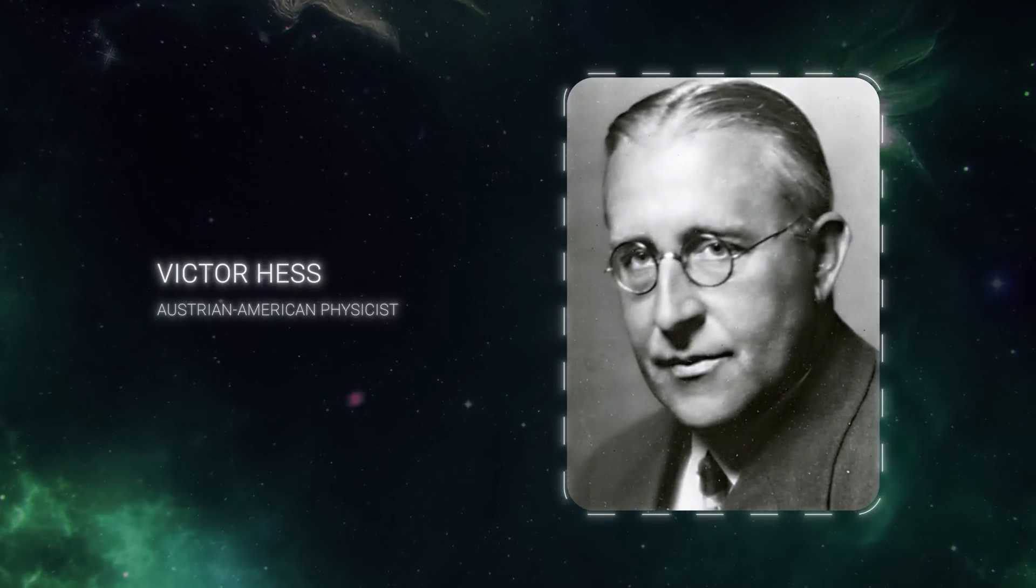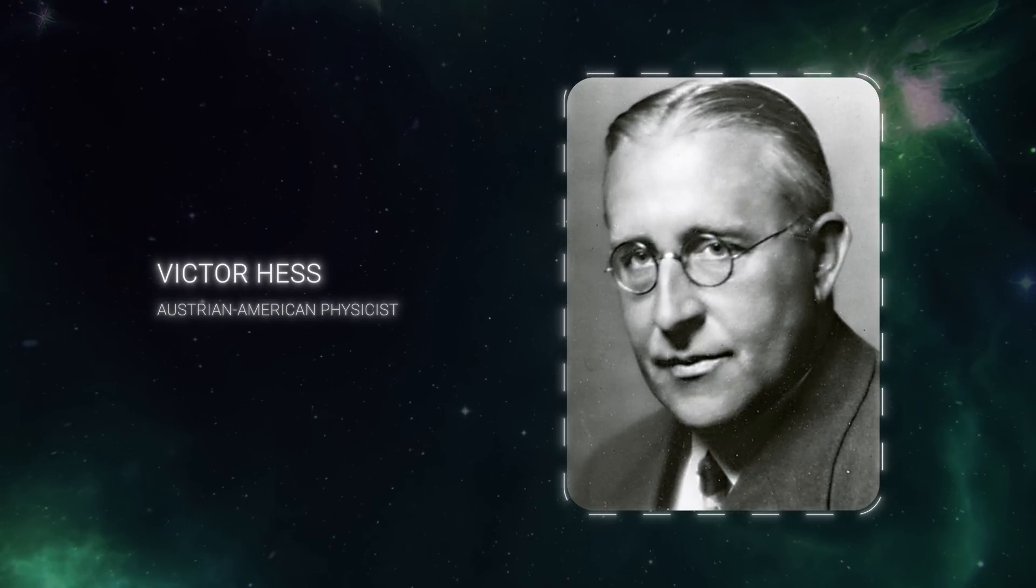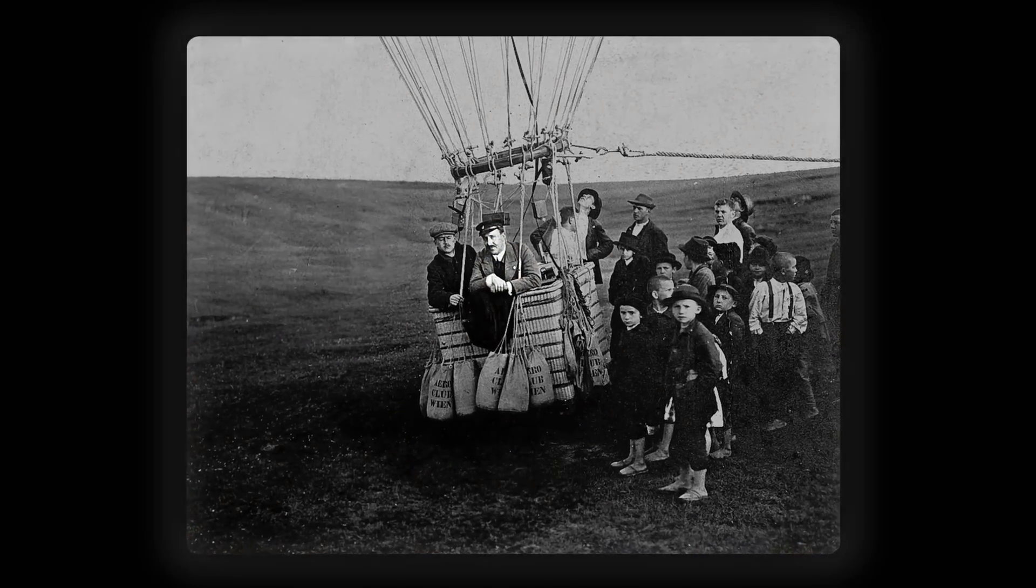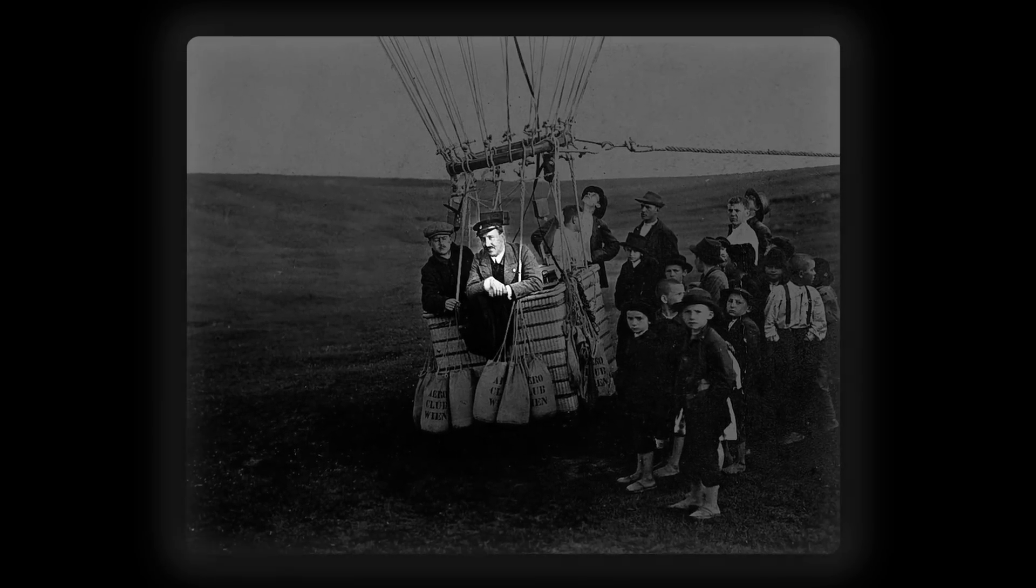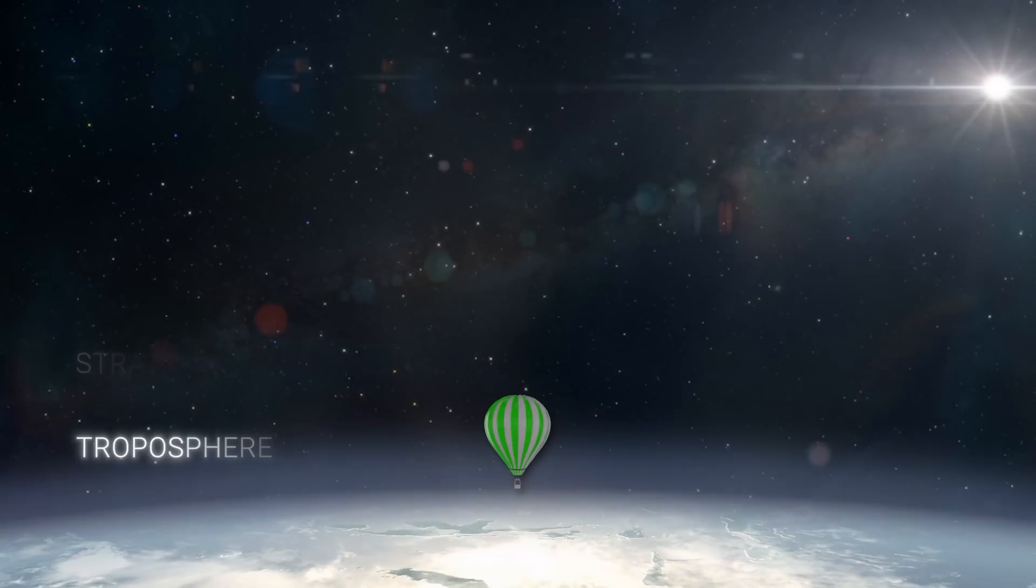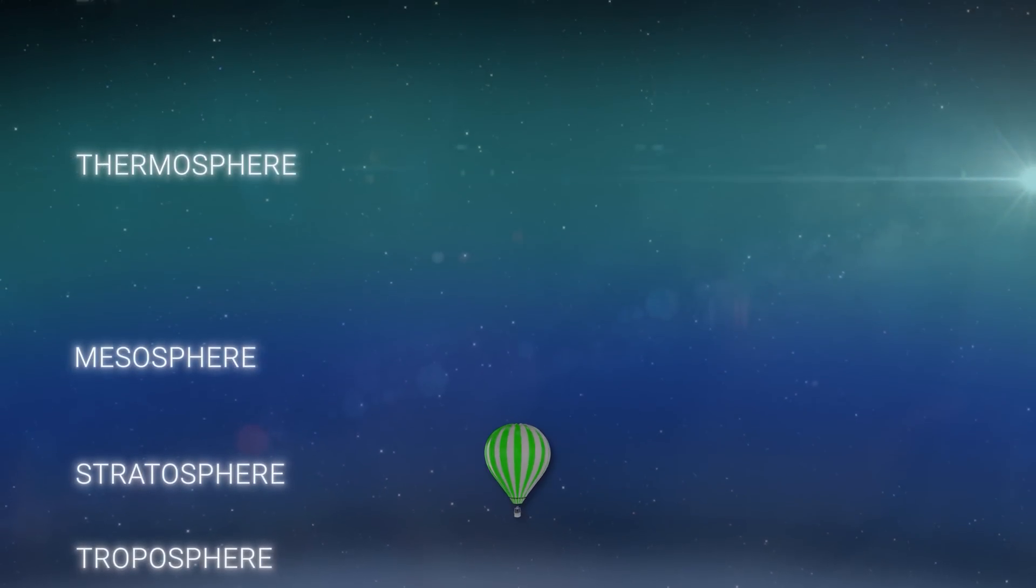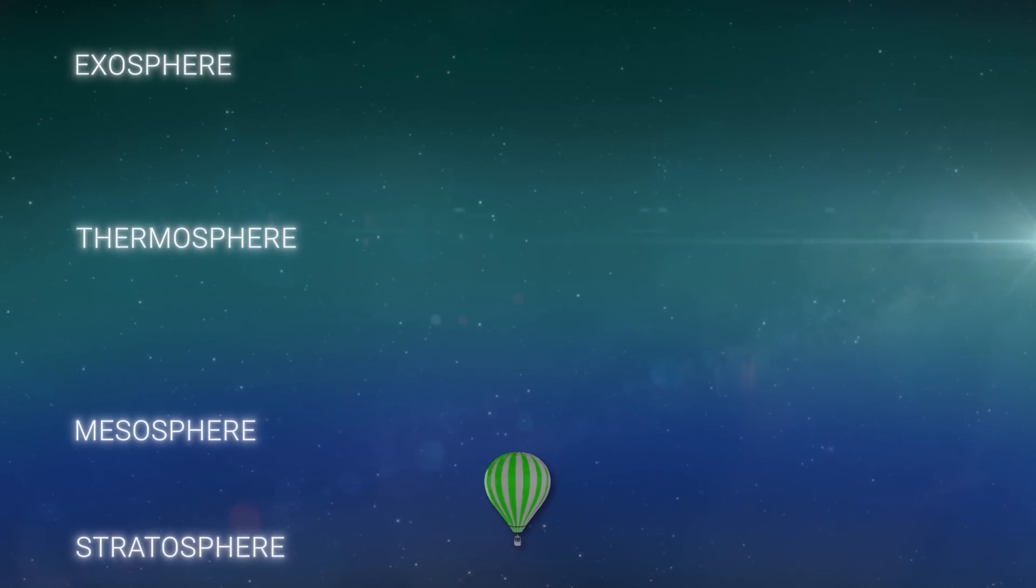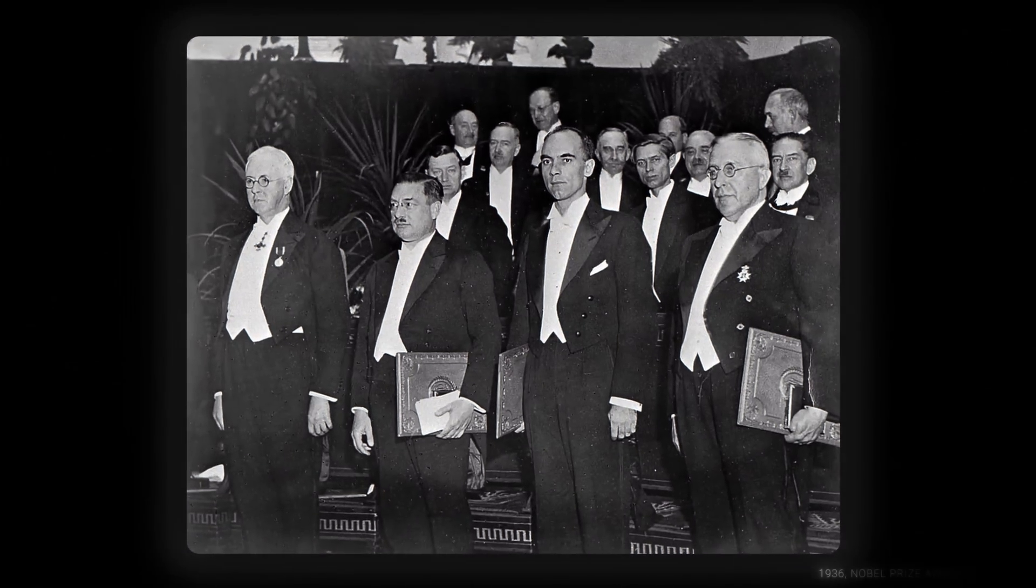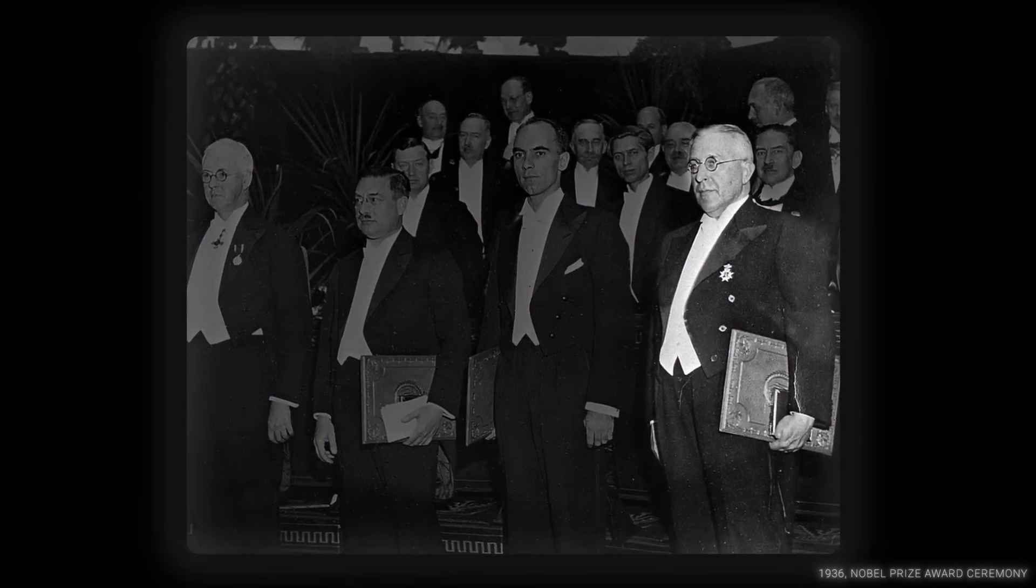This discovery paved the way for Victor Hess to take to the skies in a hot air balloon in 1912. Hess's daring journey into the upper atmosphere led to a crucial discovery. Radiation did not decrease with altitude as might be expected if it came from Earth. However, it increased, indicating an extraterrestrial source. He subsequently won the Nobel Prize in 1936 for his discovery of cosmic rays.